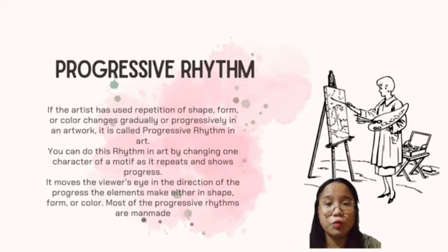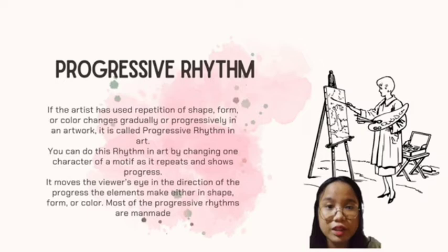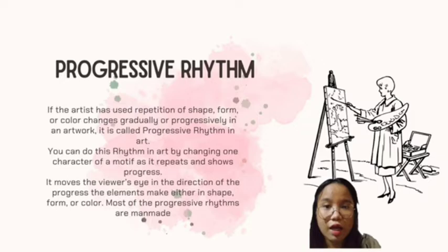The benefits of making progressive rhythm in art: progressive rhythm gives a sense of natural or secure feelings and a sense of perfect prediction with a progressive variable attached to it. Though rhythm can create monotony, progressive rhythm breaks the set.